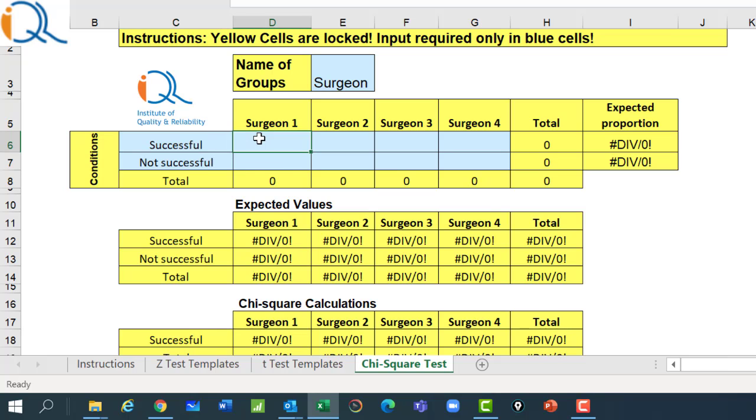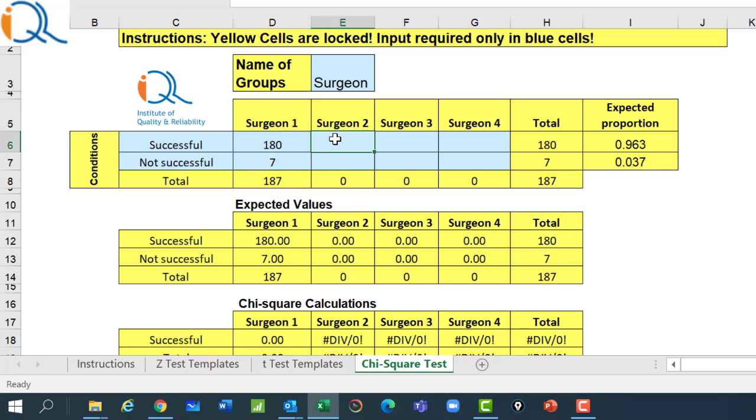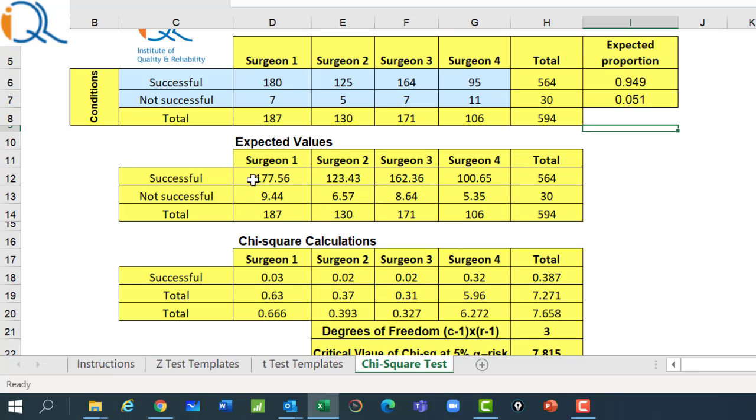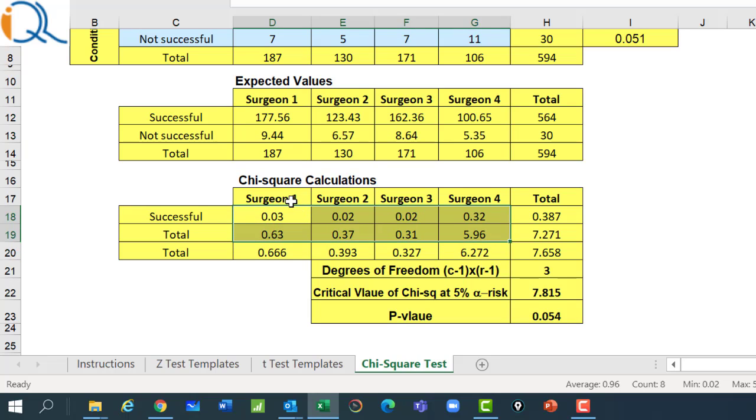And I can now input the data for first Surgeon it is 180 successful, 7 not successful, Surgeon 2 125 successful, 5 not successful, Surgeon 3 164 successful, 7 not successful, Surgeon 4 95 successful, 11 not successful. The moment I do that, I can see the expected values in the lower table and the chi-square value in the last table and the totals of the chi-square values. The total of the chi-square is 7.658 degrees of freedom as 3 critical value of chi-square at 5% alpha risk is 7.815 and the p-value is 0.054.